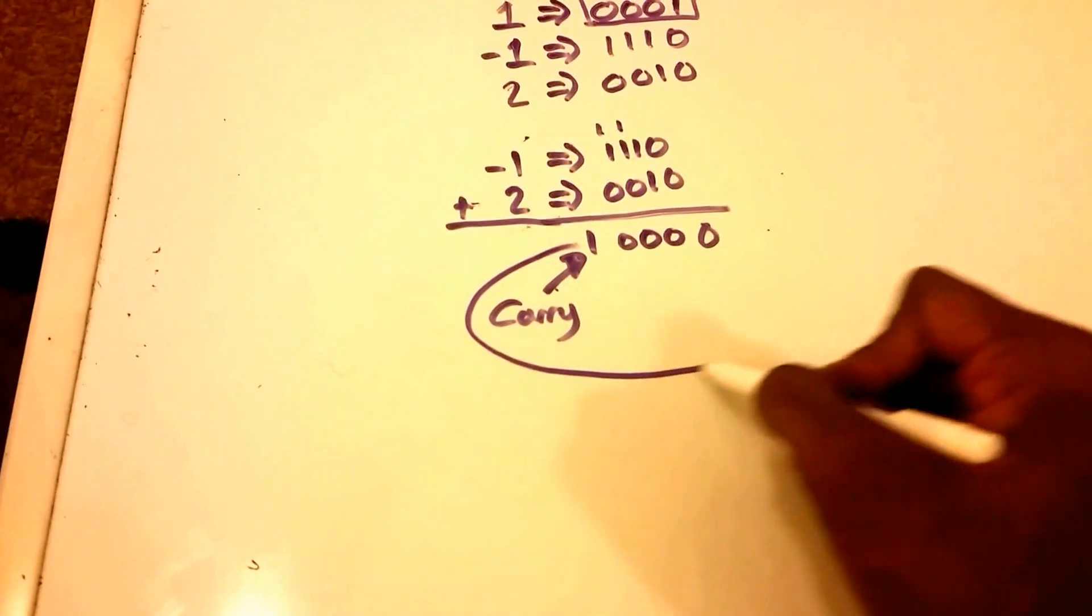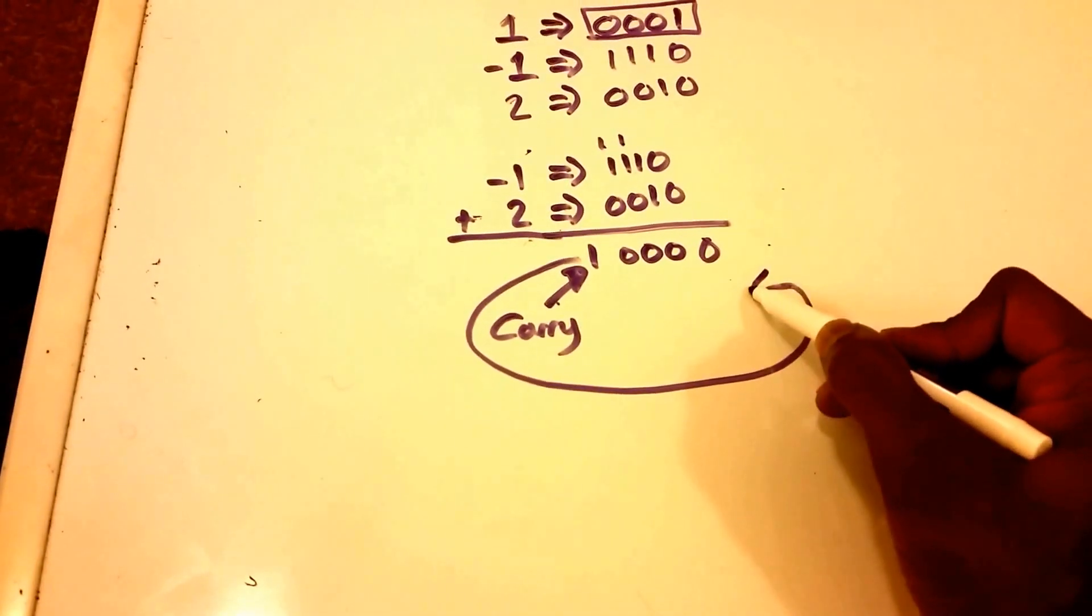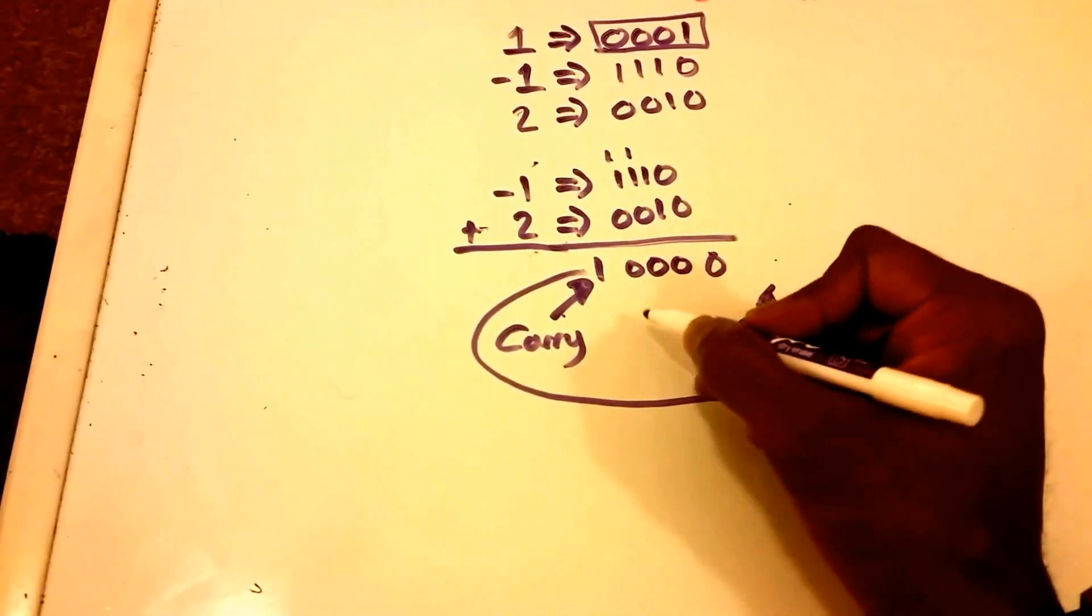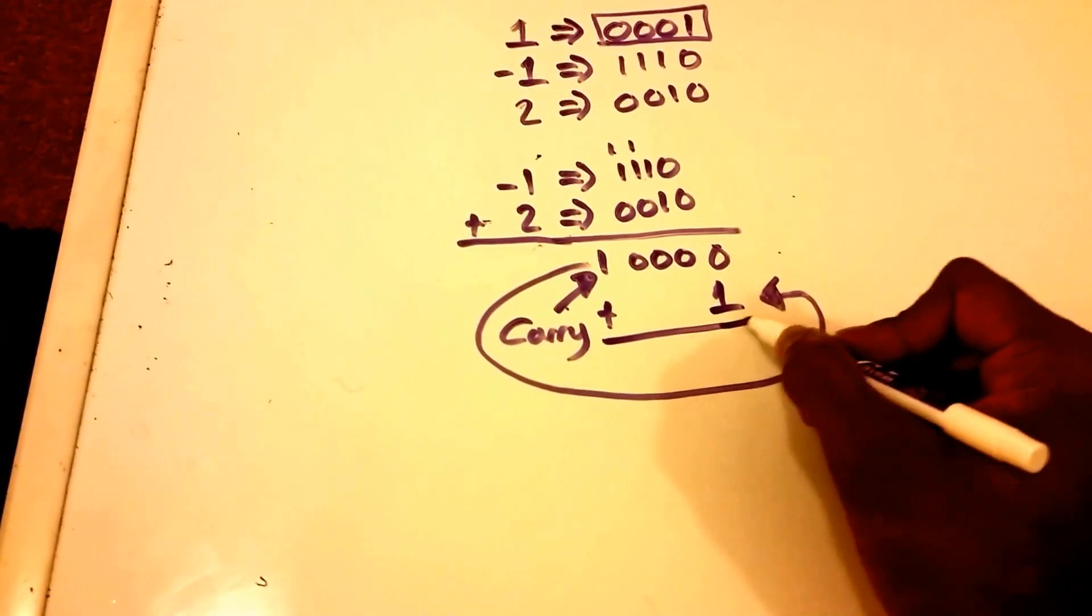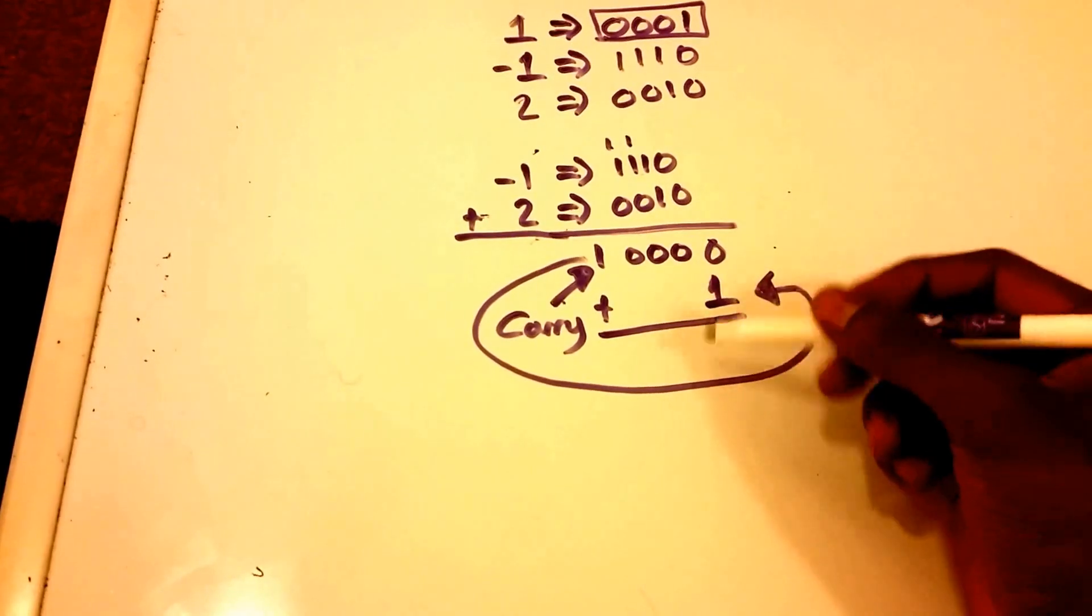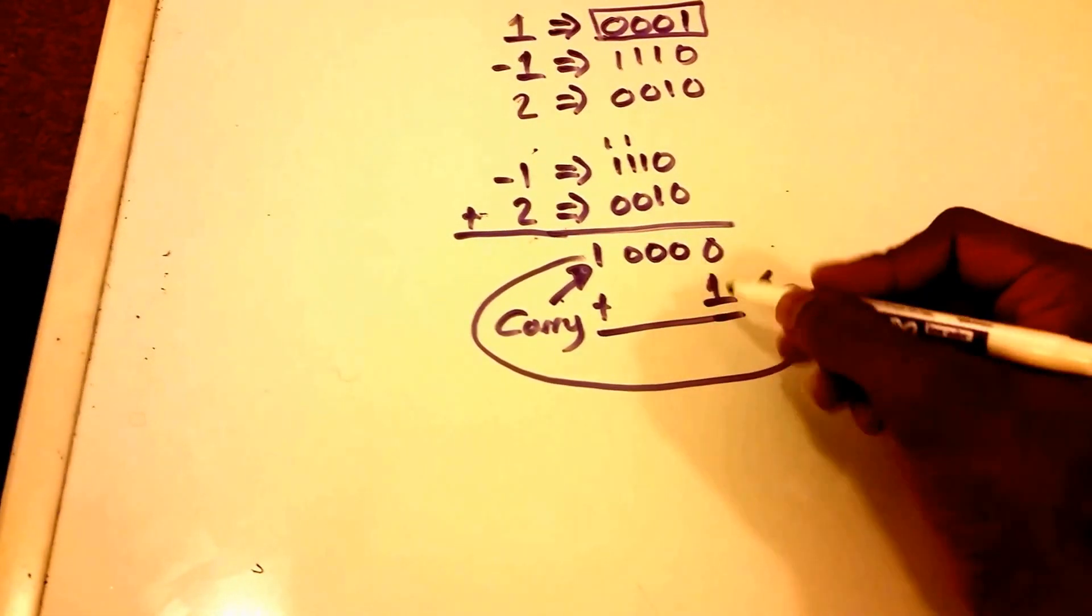So what we do here again is we take that carry bit and we're going to basically bring it back around and add it to the resulting sum. So we're gonna bring it right here.